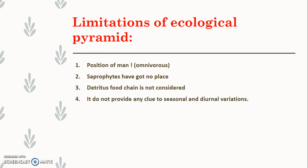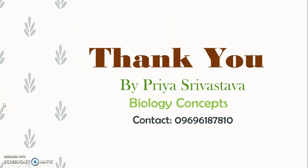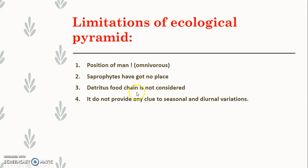There are also limitations of ecological pyramids. There is no place for man — the position of man, who is omnivorous, is not mentioned. Saprophytes have no place in ecological pyramids. The detritus food chain is not considered. It also does not provide any clue to seasonal and diurnal variations.